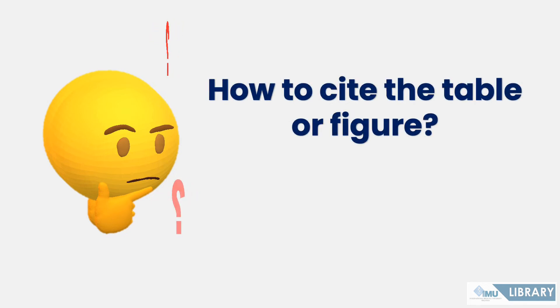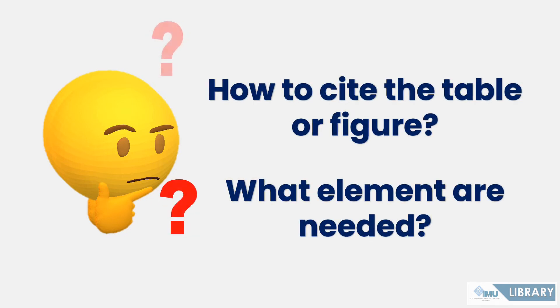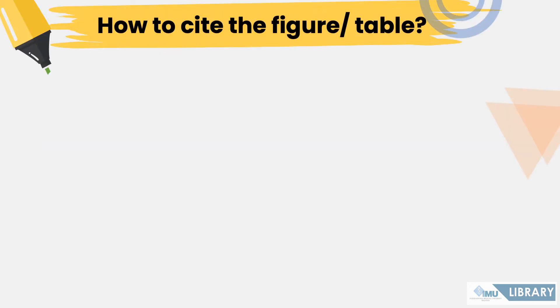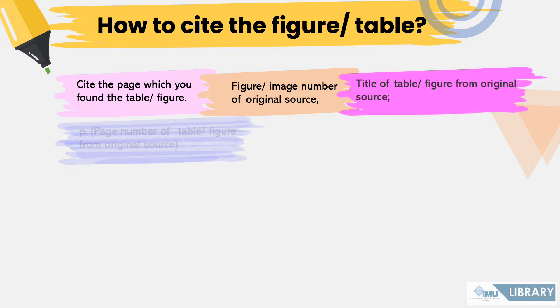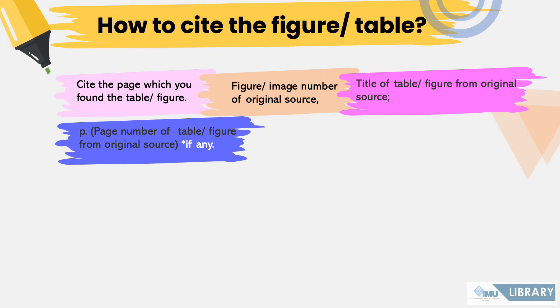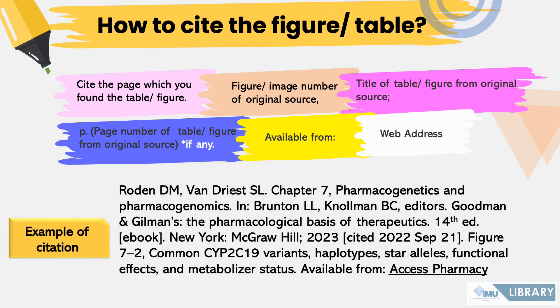To cite a table or figure, first cite the pages on which you found the table or figure, then add a full stop. Write the figure number, comma, followed by the title of the figure, then a semicolon. Next, write the page number if available, then write 'available from:' followed by a colon and the web address citation. Here is an example of how to reference a figure from this eBook.